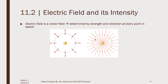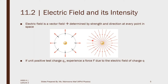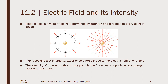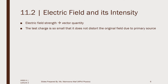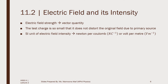If a unit positive charge Q₀ experiences a force F due to the electric field of charge Q, then we can define the intensity of an electric field at any point as the force per unit positive charge placed at that point. Mathematically, we can write the equation for the electric field intensity as E = F/Q₀, where E is the electric field intensity, F is the force, and Q₀ is the charge of the positive test charge. This is a vector quantity, and the test charge is so small that it does not distort the original field due to the primary source. The SI unit of electric field intensity is newton per coulomb or volt per meter.